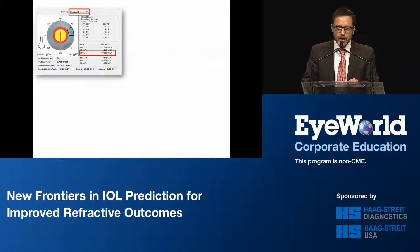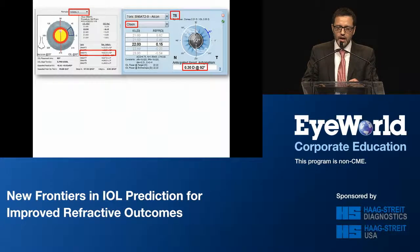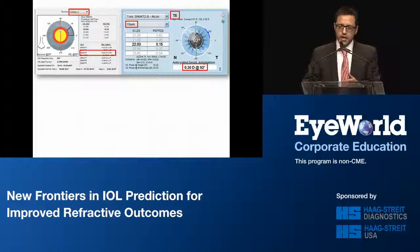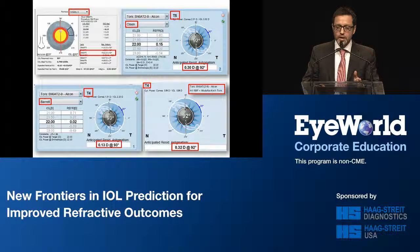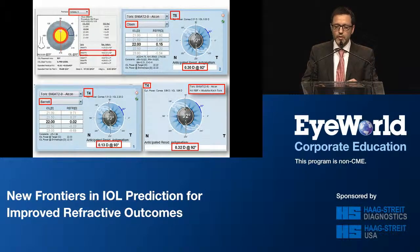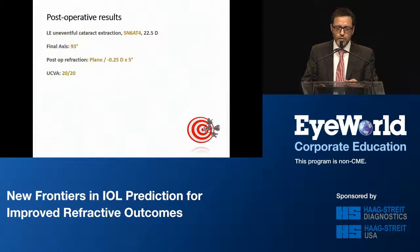Looking at the Holladay toric calculator, we would likely pick a T5 lens. The Olsen with the standard toric calculator on the LENSTAR would also likely pick a T5. However, looking at the Barrett toric calculator and the Hill RBF toric calculator, we would pick a T4 lens — and that is what I did. She had an uneventful cataract extraction, the final axis was just one degree off, her postoperative refraction was quite good, and she is seeing 20/20 unaided.